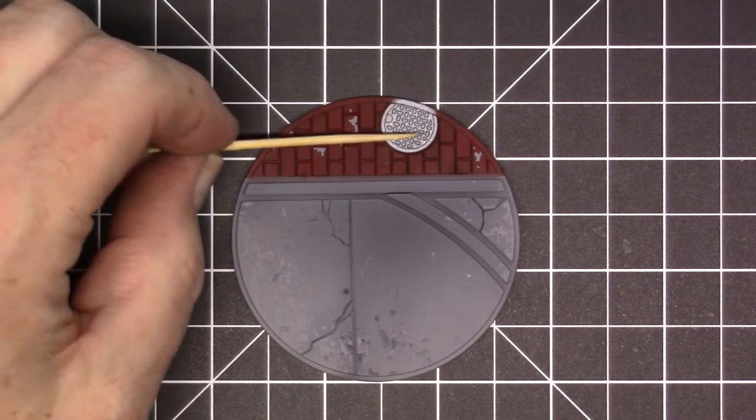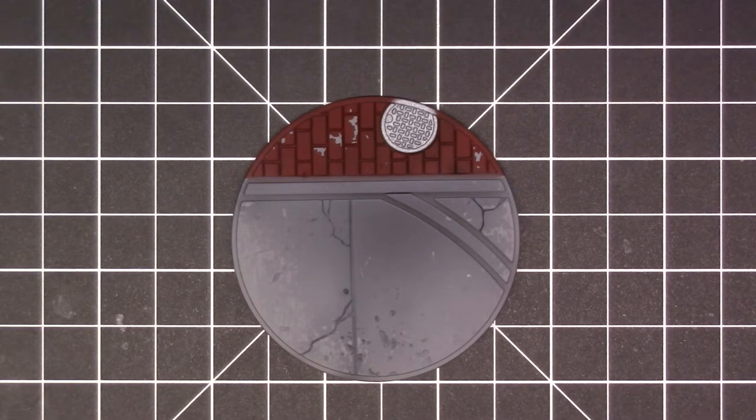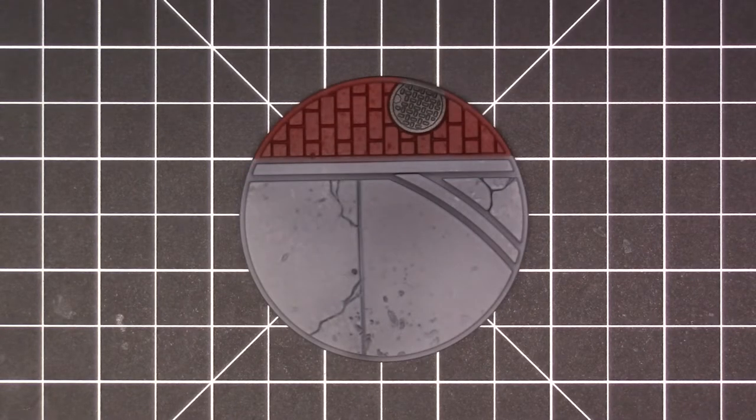So what I'll do is mask the manhole cover off and mask the rest of the concrete off, give it another coat of that burnt red. It'll just look like damaged brick or something like that. It'll be a fine texture, it'll look good.